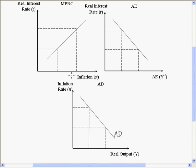Let's first look at what's on the axes of these curves. For the monetary policy reaction curve, we have the inflation rate on the horizontal axis and the real interest rate on the vertical axis. What it says is that when the inflation rate goes up, the monetary policy authority would like to increase the real interest rate to curb aggregate demand and reduce inflation — they don't want inflation going out of control.